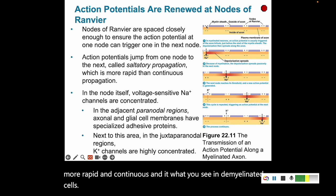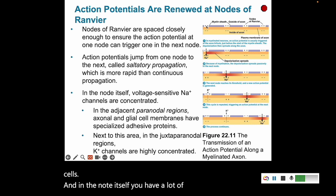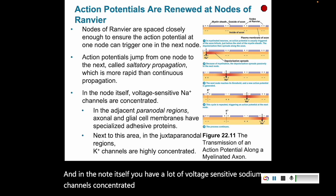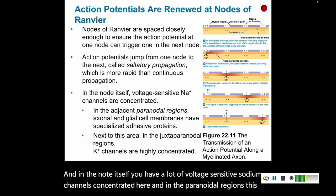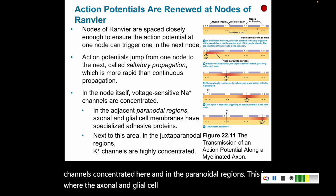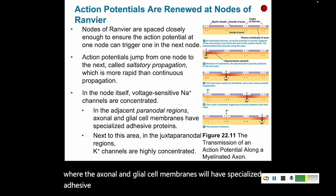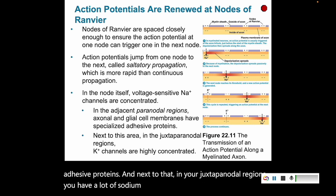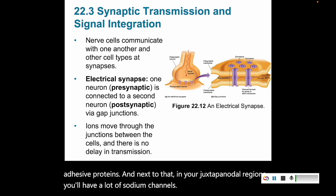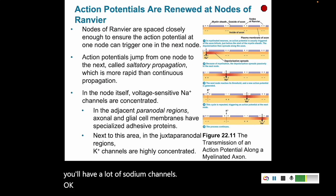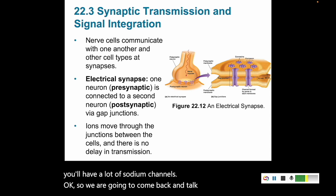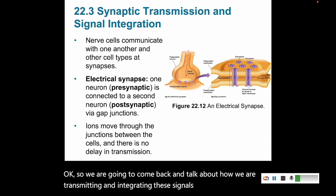In the node itself, there are many voltage-sensitive sodium channels concentrated there. In the perinodal regions, axonal and glial cell membranes have specialized adhesive proteins, and in the juxtaparanodal regions there are many sodium channels. We'll come back to discuss how signals are transmitted and integrated through neuronal cells.